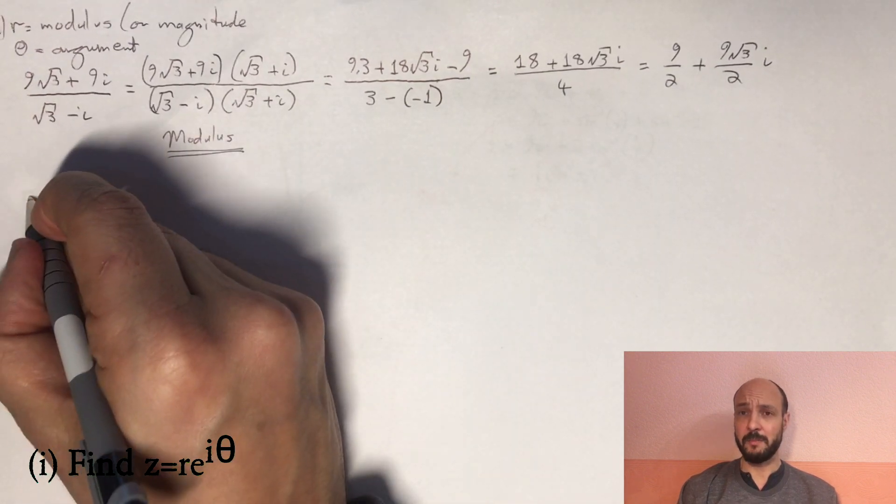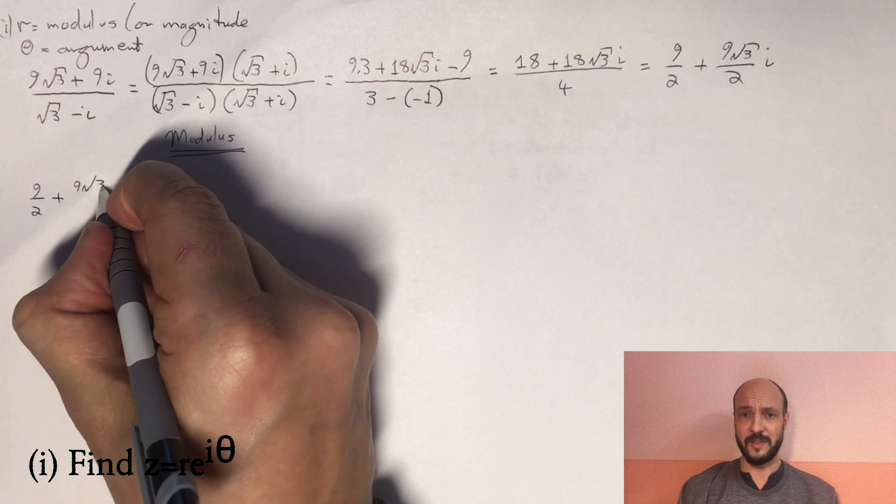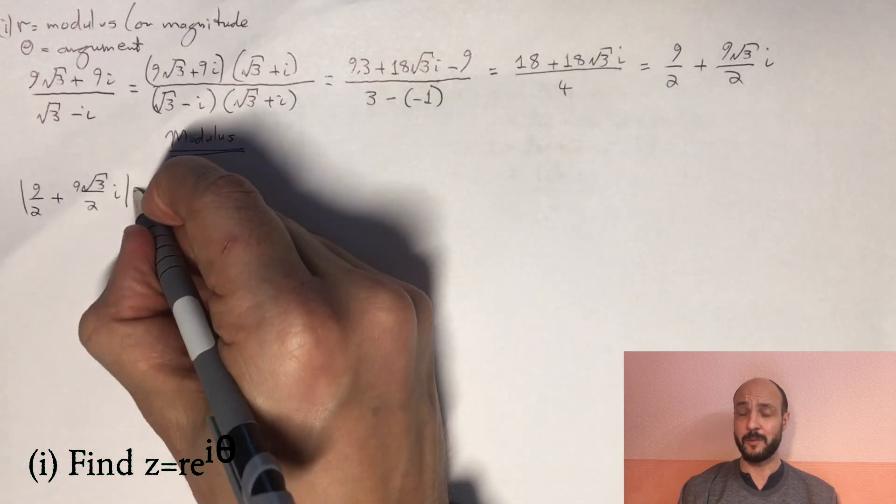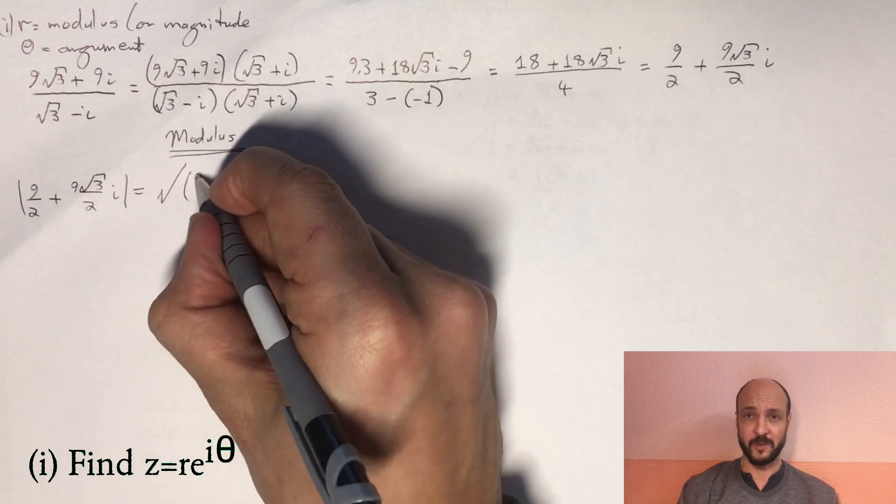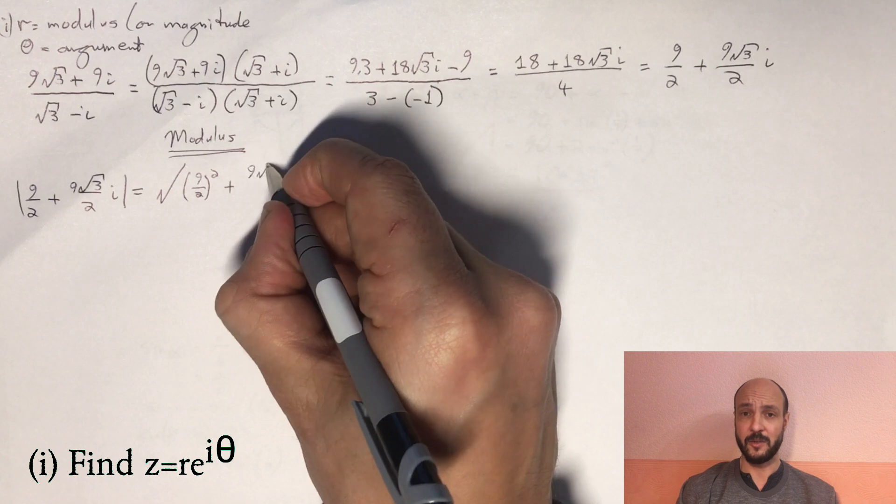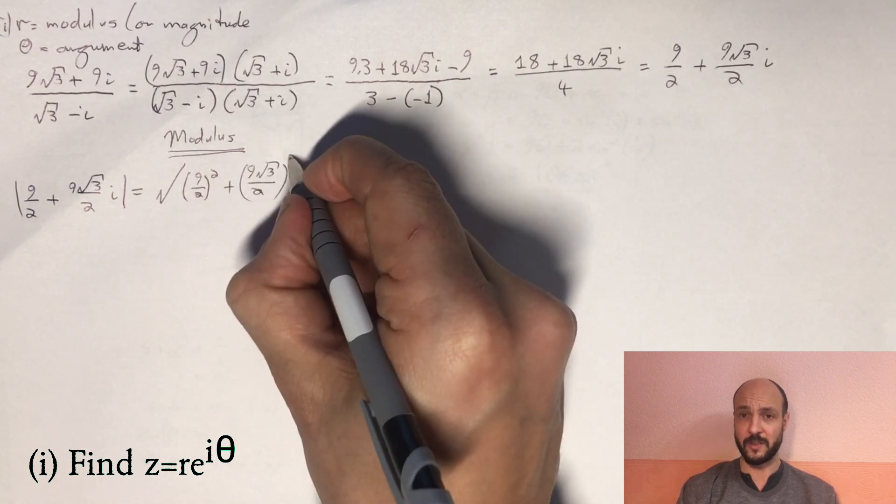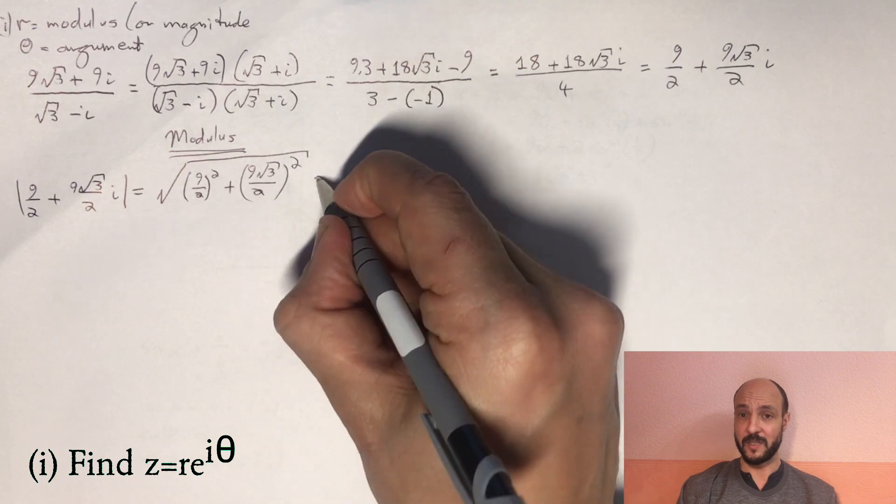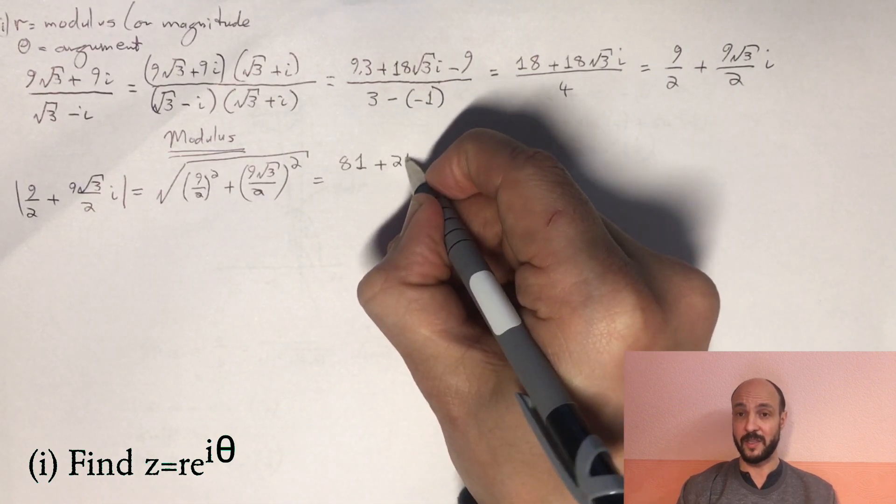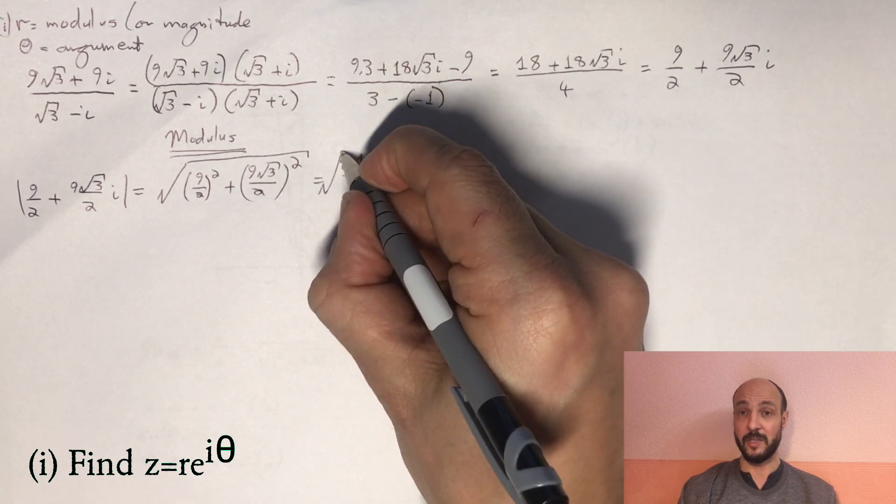To get our modulus, it's like using Pythagoras' theorem. We say the modulus of 9/2 + 9√3/2i is equal to the square root of the square of the real part and the square of the imaginary part added together. So the square root of (9/2)² + (9√3/2)², which is equal to the square root of 81/4 + 243/4. 81 plus 243 is 324. So we have the square root of 324/4.